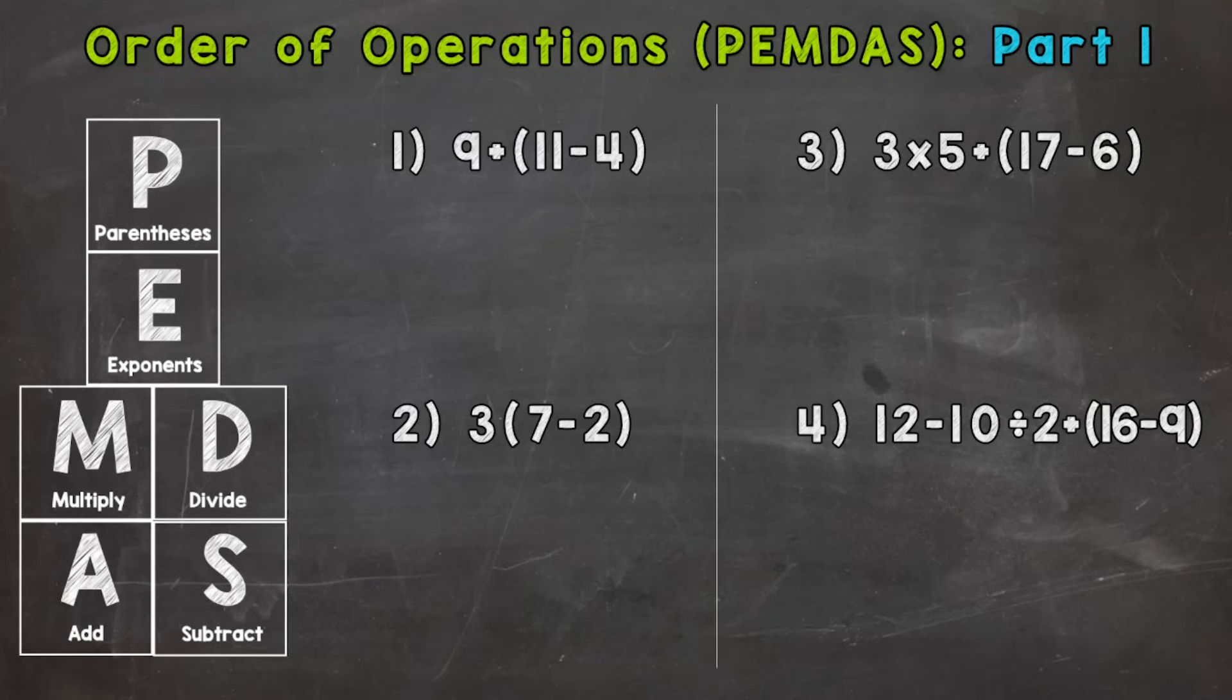So parentheses is up top. That's number one priority. Whenever you see it in a problem that comes first. And then we work our way down that chart. Exponents is second priority. Level three is multiply and divide. And then we have add and subtract.